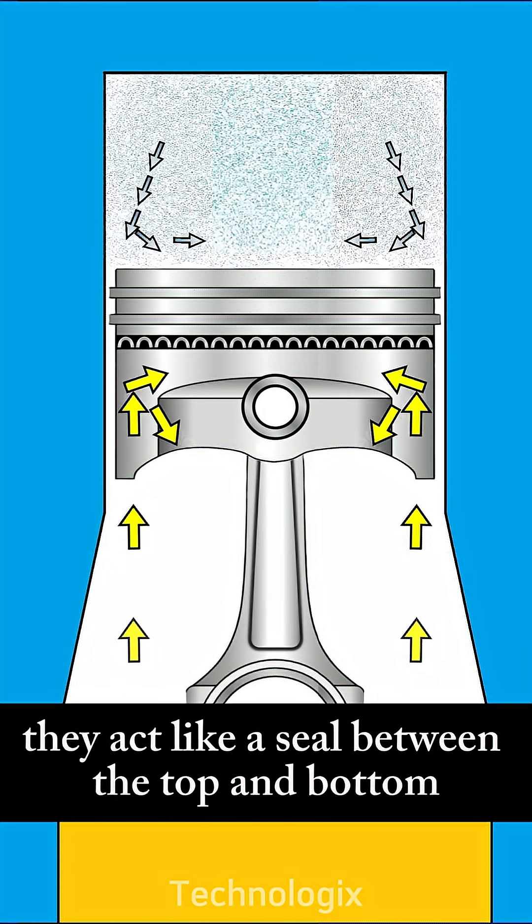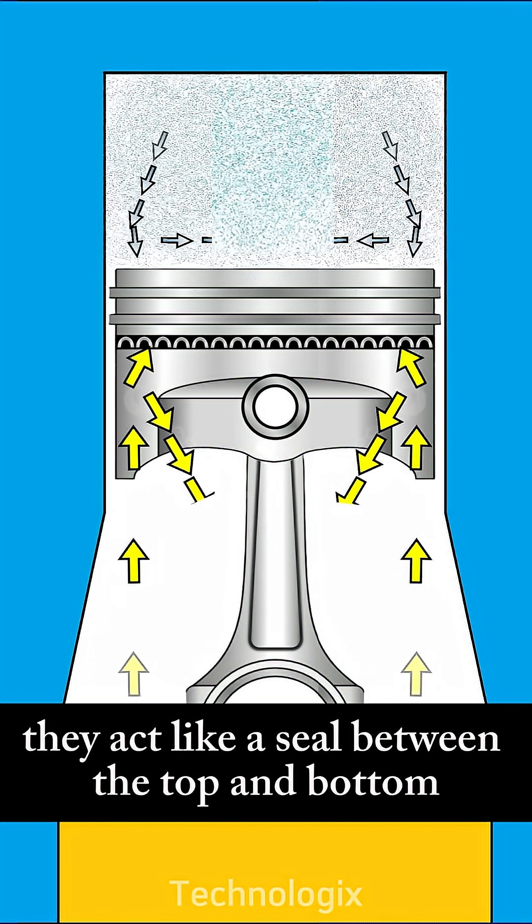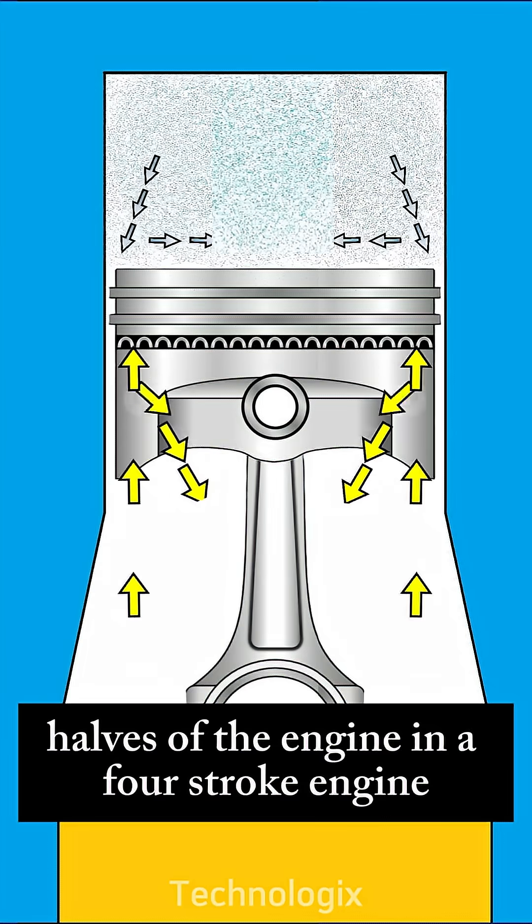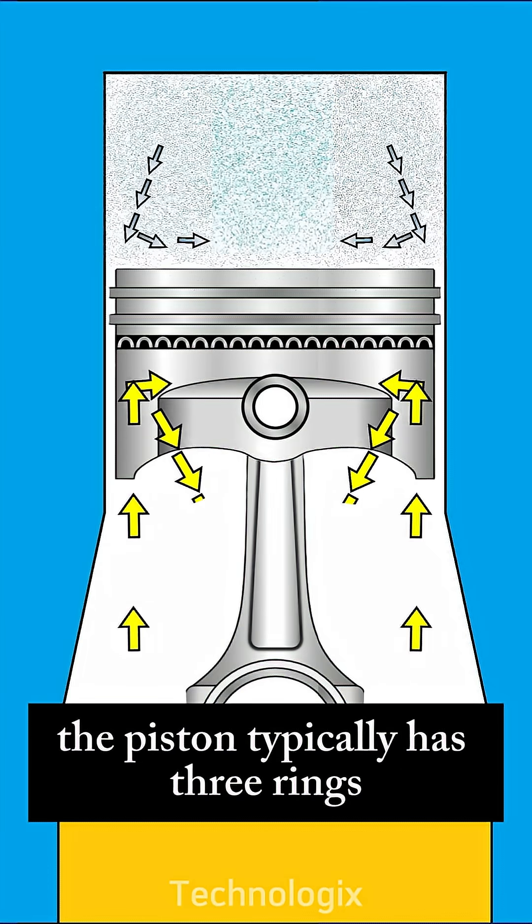In other words, they act like a seal between the top and bottom halves of the engine. In a four-stroke engine, the piston typically has three rings.